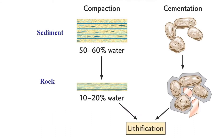Lithification entails compaction and cementation of sediment. Compaction occurs when strata pile up over time, adding weight on top of sediment. This added weight compresses the sediment, reducing the thickness of the layers and squeezing out any water or air that is present. As a layer of wet sand is compacted, it becomes thinner and loses much of its water.